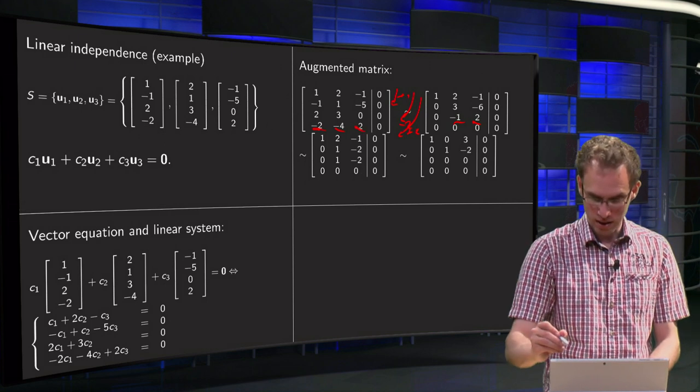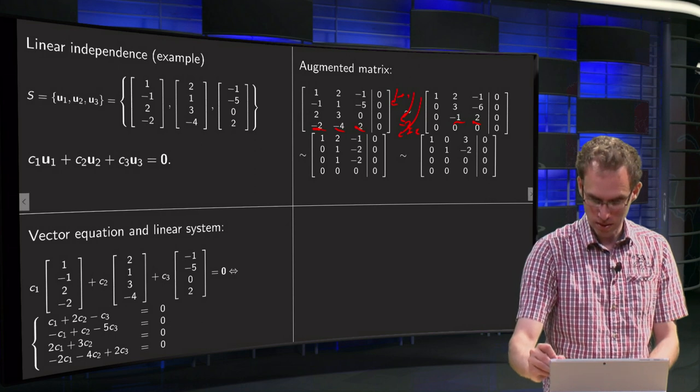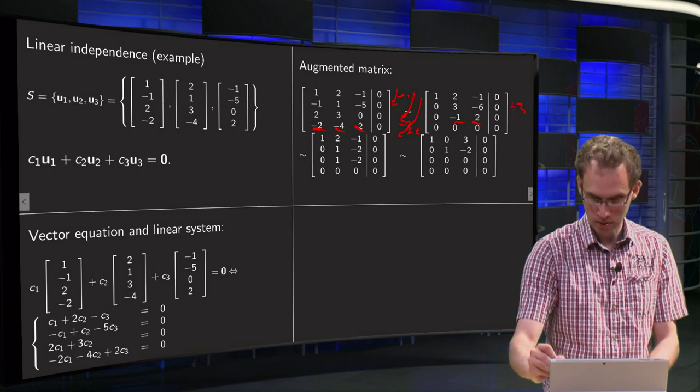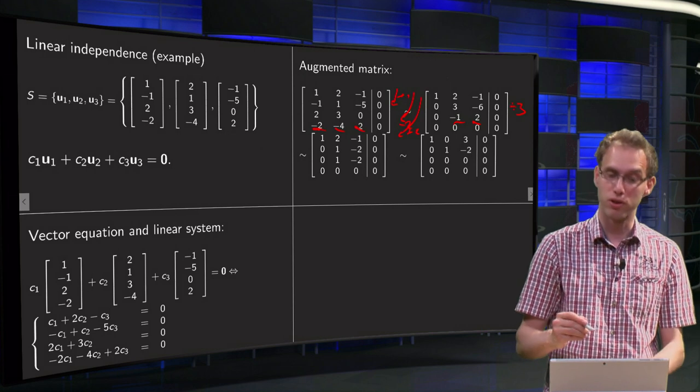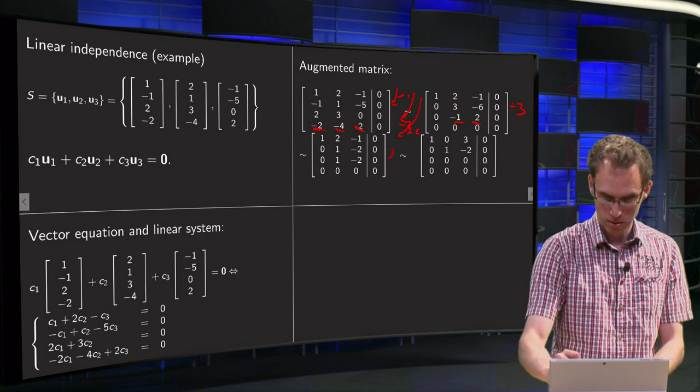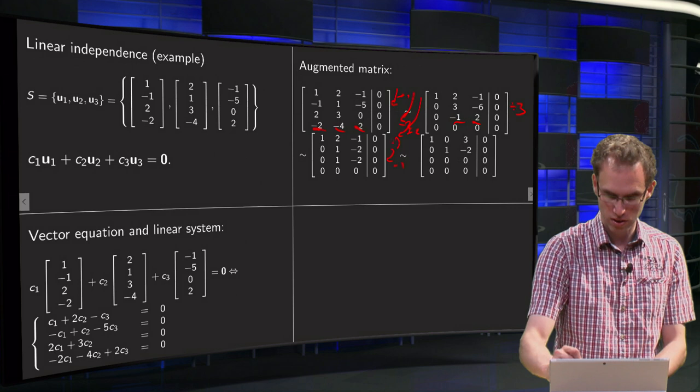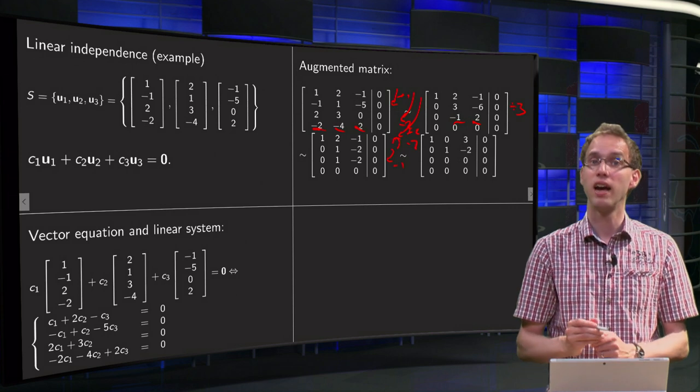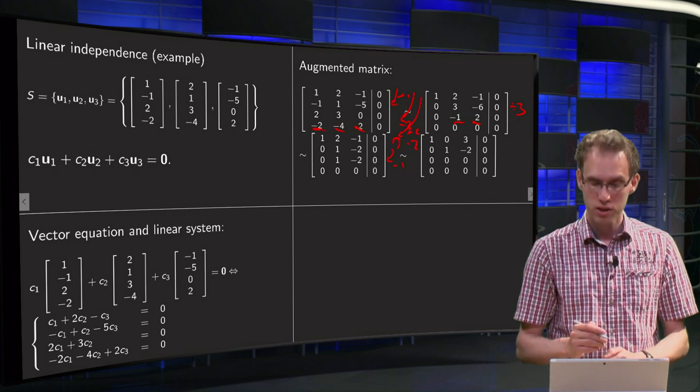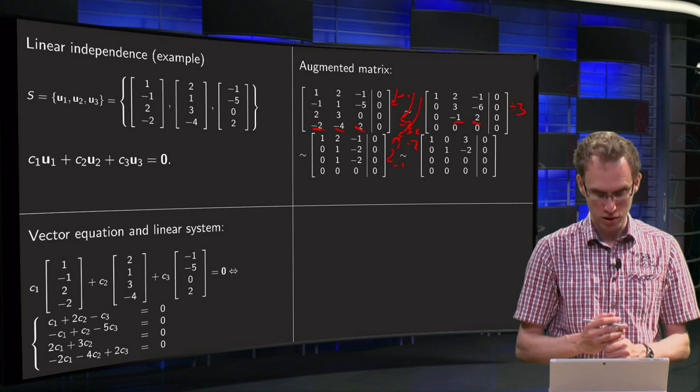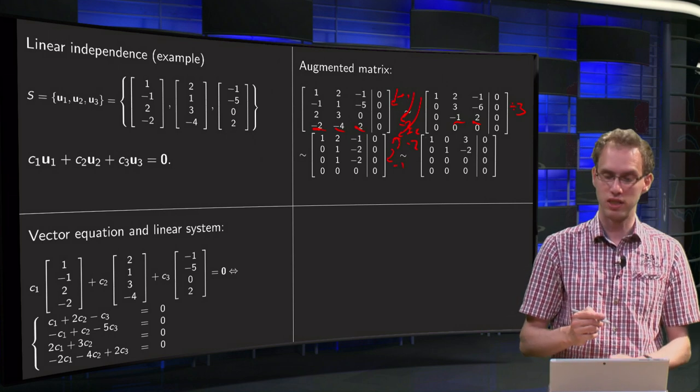And then we can divide this one by 3 to get a nice 1, and we see that the second and third row become the same, so subtract it once here, subtract it twice over here to get a nice reduction form. So we get an additional row with zeros, and the first row becomes 1, 0, 3, 0.